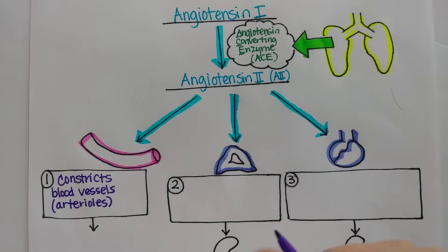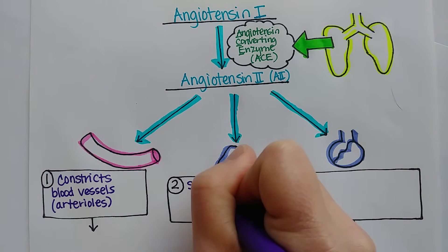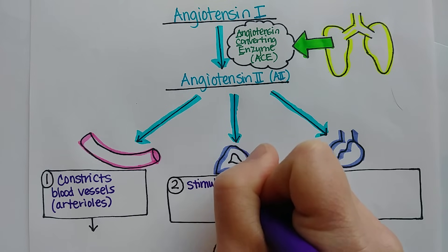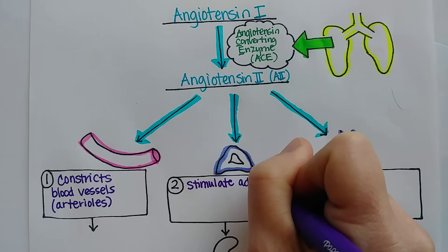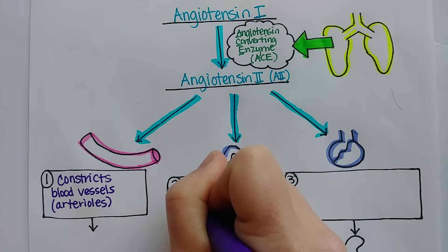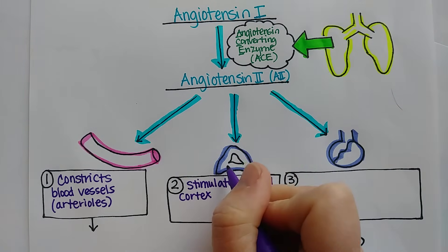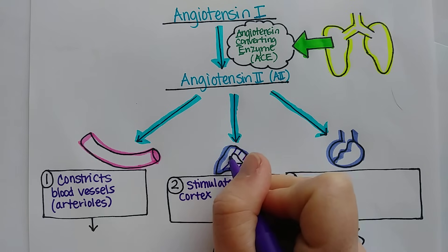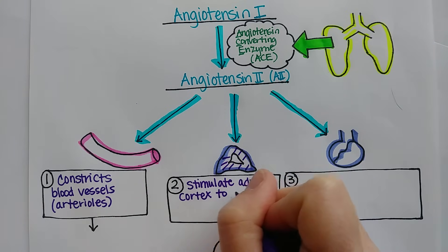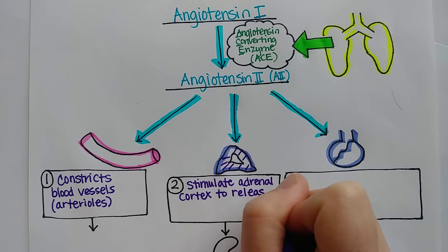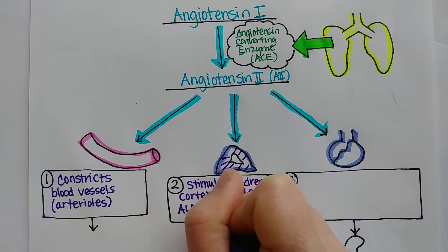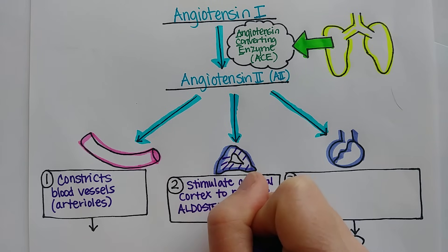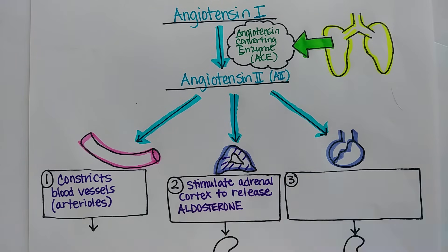The second thing angiotensin 2 is going to do is stimulate the adrenal cortex to release another hormone called aldosterone. And that's going to make the kidneys reabsorb more salt, and that is going to raise blood pressure.